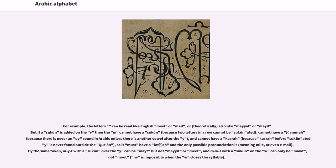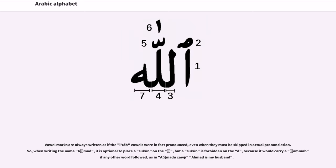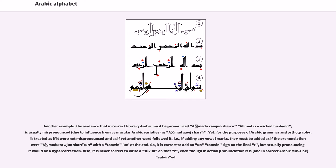If a sukun is added on the ya, then the preceding letter cannot have a sukun (because two letters in a row cannot be sukunated), cannot have a dhamma (because there is never a 'we' sound in Arabic unless there is another vowel after the ya), and cannot have a kasra (because kasra before sukunated ya is never found outside the Quran), so it must have a fatha and the only possible pronunciation is 'mail' or 'male'. Vowel marks are always written as if the Arabic vowels were in fact pronounced, even when they must be skipped in actual pronunciation. So when writing the name 'Ahmad', it is optional to place a sukun on the ha, but a sukun is forbidden on the dal, because it would carry a dhamma if any other word followed.